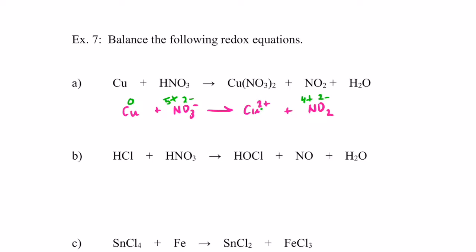Now let's check to make sure the atoms that change oxidation numbers are balanced. Copper goes from zero to positive two, and there's one copper on each side — those are balanced. Nitrogen goes from positive five to positive four, and there's one nitrogen on both sides. So the atoms that change oxidation number are balanced. Step two is done.